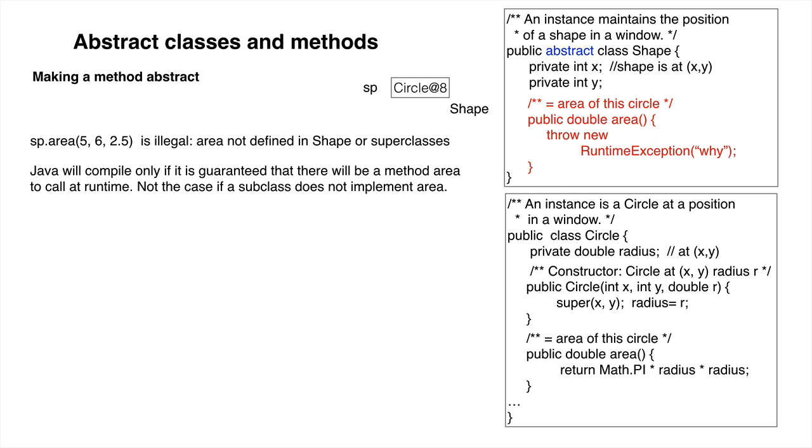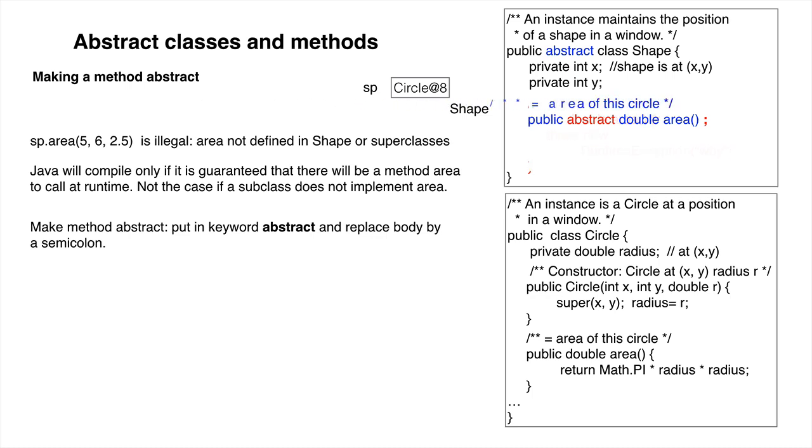Some class may not implement method area. To force all subclasses to implement the method, we make the method abstract by placing keyword abstract after public and replacing the method body by a semicolon. So here's the reason for making a method in an abstract class abstract. Memorize it. Make a method abstract so subclasses must implement it.